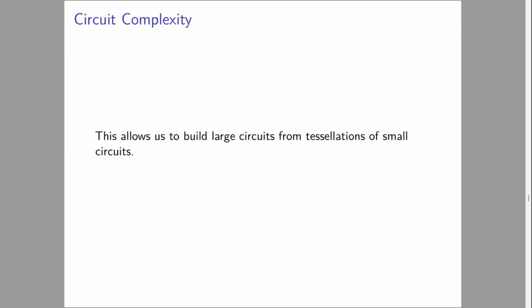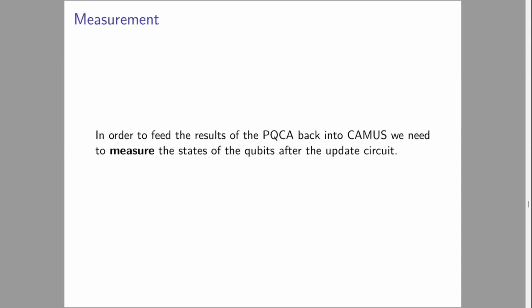Quick note about measurement. We have our quantum states, we have our quantum update. We need to feed this into CAMU, but we also need to keep that information to feed back into the next update. Therefore we need to copy information, and that isn't allowed in quantum computing in general. There's some interesting ways around it, but for now, we are measuring the states of the qubit after the update circuit. This means that the lifetime of our quantum state is quite brief. It is from the initialization of the state based on classical data, through the update circuit, through to measurement, at which point it is collapsed.